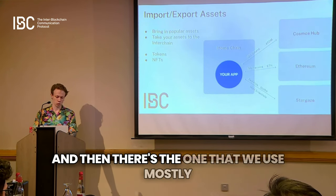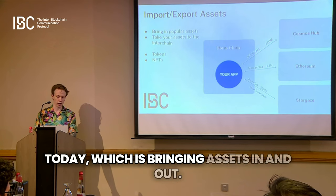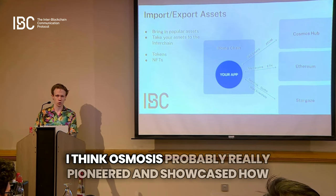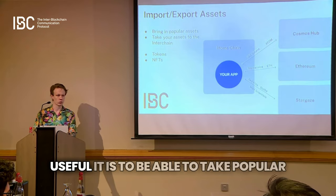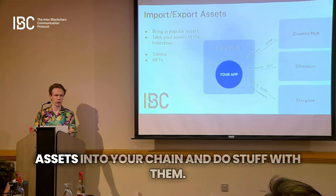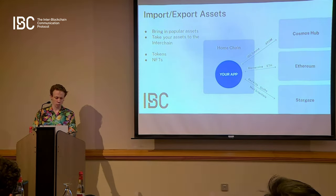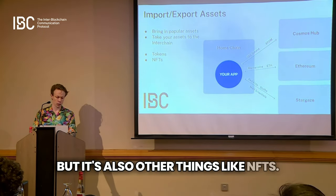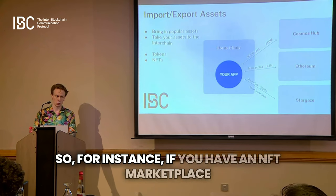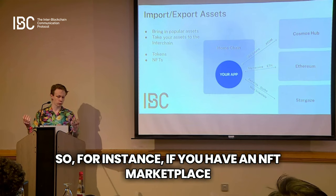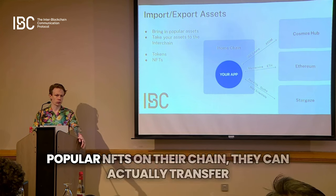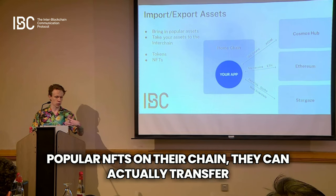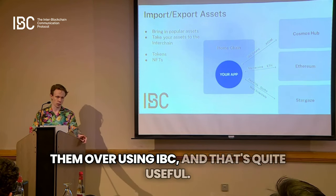And then there's the use case we mostly use today — bringing assets in and out. I think Osmosis really pioneered and showcased how useful it is to take popular assets into your chain and do stuff with them. It's also other things, like NFTs. For instance, if you have an NFT marketplace like Stargaze and they want to have other popular NFTs on their chain, they can actually transfer them over using IBC.